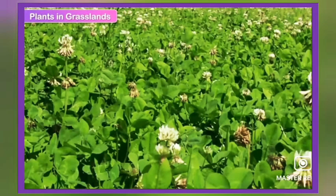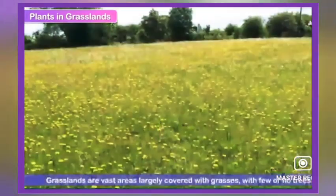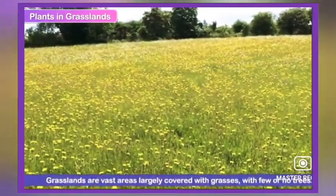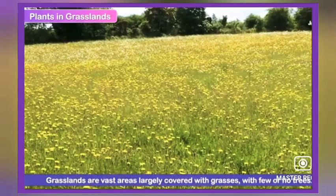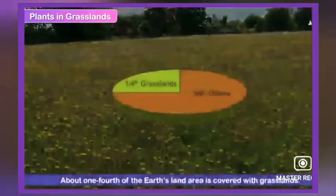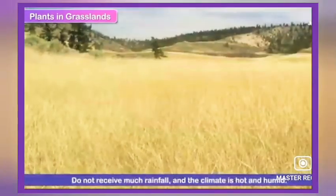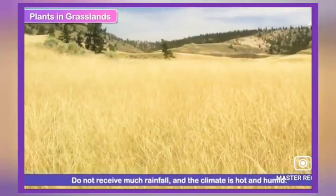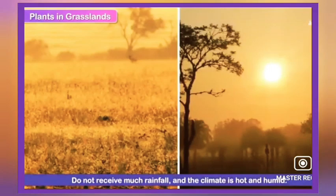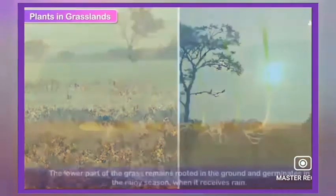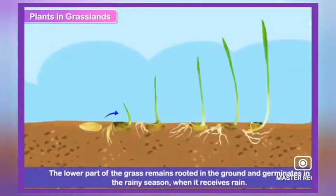Plants in grasslands: grasslands are vast areas largely covered with grasses with few or no trees. About one fourth of the earth's land area is covered with grasslands. These areas do not receive much rainfall and the climate is hot and humid. The lower part of the grass remains rooted in the ground and germinates in the rainy season when it receives rain.